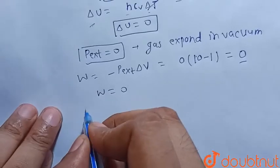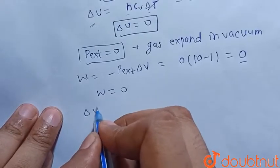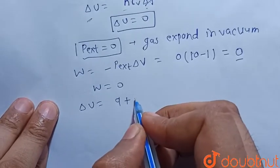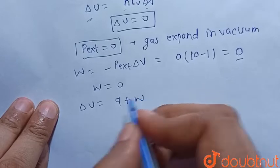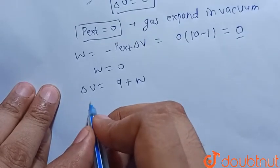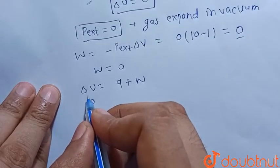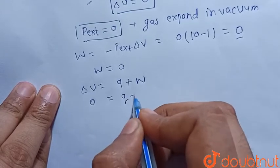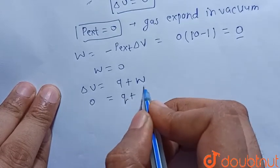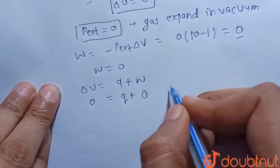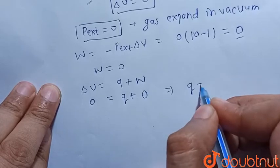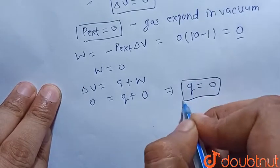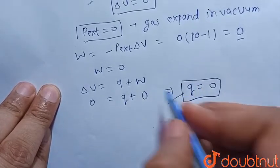From the first law of thermodynamics, delta U = Q + W. Since delta U = 0 and W = 0, it implies Q is also equal to 0.